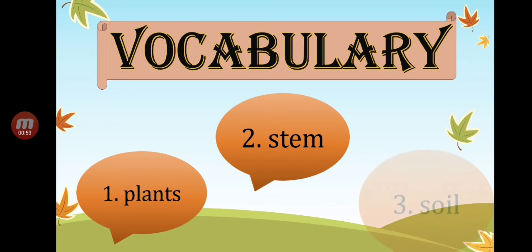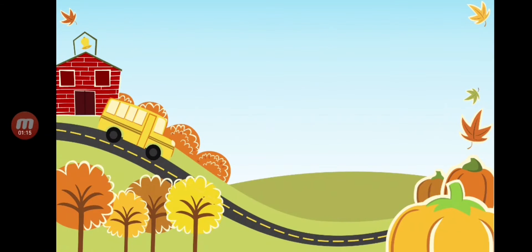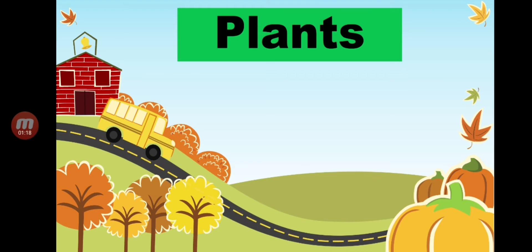Now let's proceed to number three. Number three is 'soil.' Soil, soil. Let's spell the word soil — S, O, I, L — soil. Okay, now let's start with our discussion. Our topic for this time is all about plants.